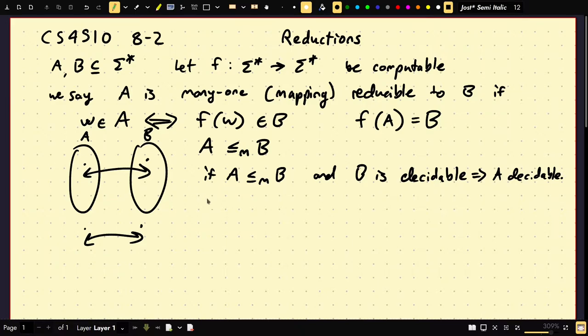So, what's our proof? Let M_B decide B. So, we assume B is decidable, there exists a decider. Call it M_B, for machine for B. Let F reduce from A to B. Define M_A as follows.